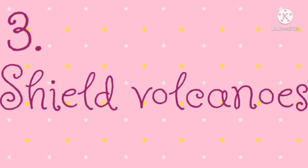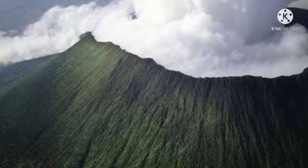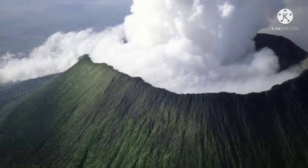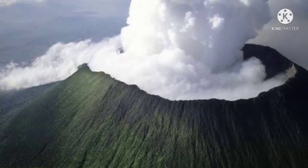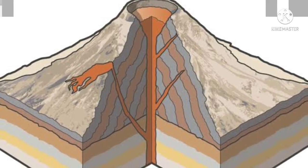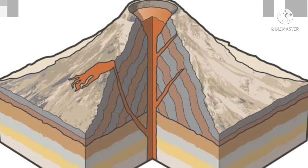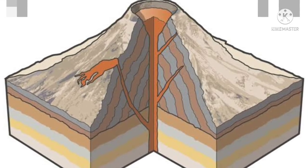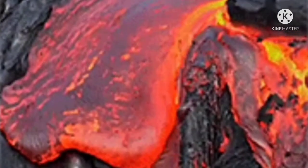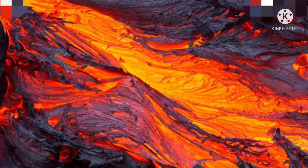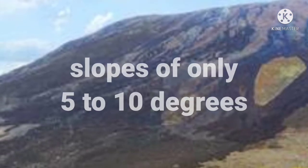Number three: shield volcanoes. Shield volcanoes are named for their shape — the flattened dome has gentle slopes that resemble a curved shield. In addition to a central vent, these volcanoes sometimes have multiple vents around the top of the dome and upper slopes. As magma rises from the magma chamber, the conduit branches into secondary passages leading to vents on the flanks. Shield volcano eruptions are primarily lava flows, and the lava cools slowly and spreads over a wide area, producing slopes of only 5 to 10 degrees.